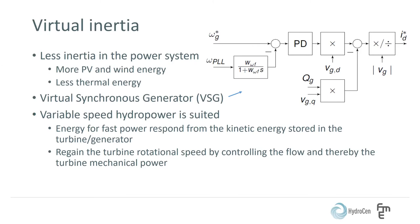Variable speed hydropower is well suited for delivering virtual inertia, since it can obtain the energy from the kinetic energy stored in the turbine and generator to change the output power almost instantaneously by converter technology. Next, the turbine rotational speed can be regained by controlling the turbine flow and thereby the turbine mechanical power. Thus, the variable speed hydropower plant can operate at a new stationary output power after the disturbance.